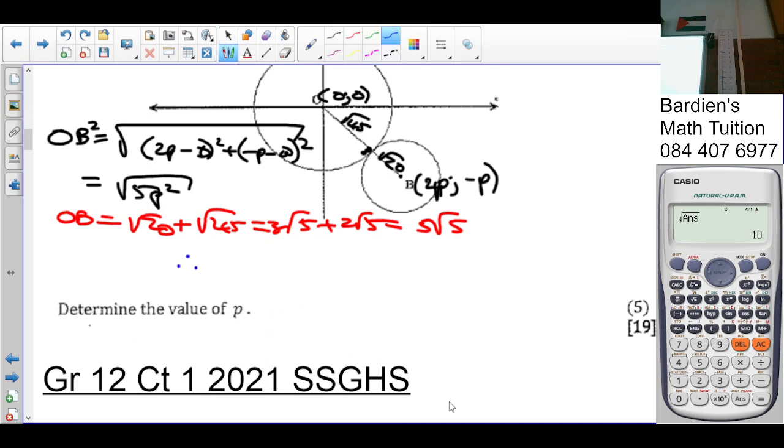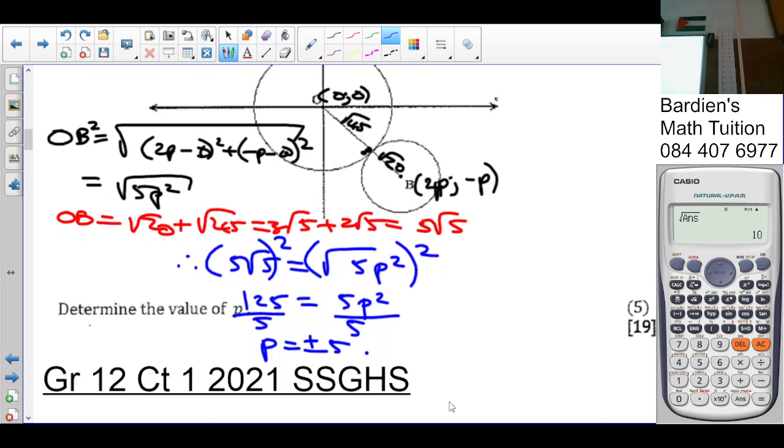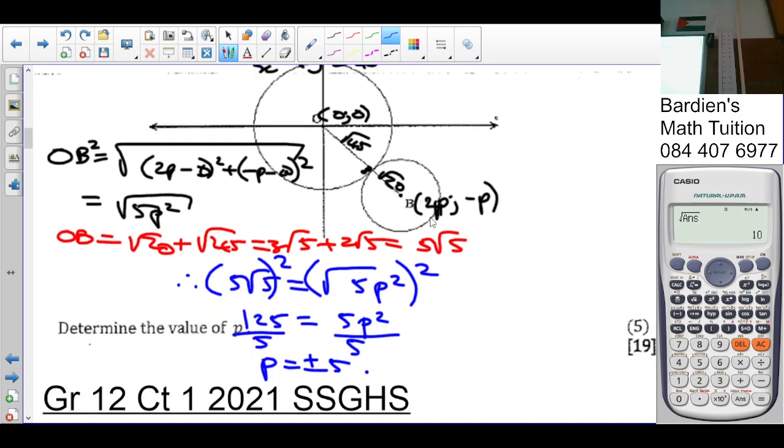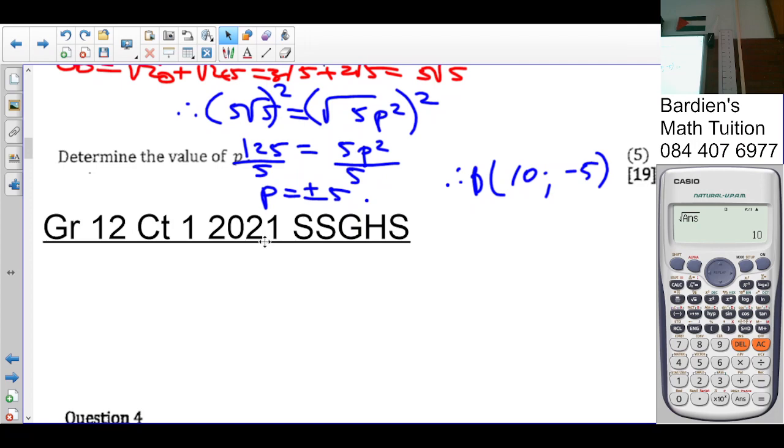So I can say, therefore, 5 root 5 is equal to the square root of 5p all squared. So if I square both sides, that's going to give us 25 times 5, which is 125, is equal to 5p squared. So I divide both sides by 5, so p squared is equal to 25. The square root of that is plus minus 5. So if you're looking at where p is situated, and they told us it's in the fourth quadrant, so therefore p has to be positive. So 2 times 5 is 10, and p is 5 is going to give you negative 5, which makes sense.